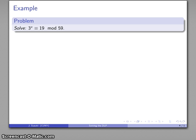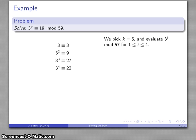For example, let's say I want to solve 3 to power x congruent to 19 mod 59. So, I'll pick a number, how about k equals 5, and I'm going to evaluate 3 to power i for all my numbers up to k minus 1. So that's going to be 3, 9, 27, and so on.